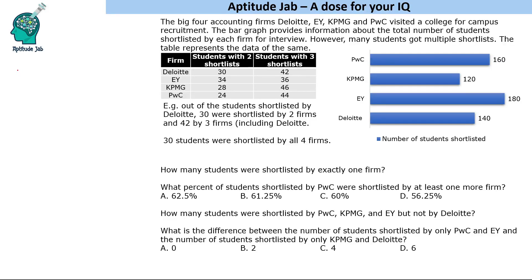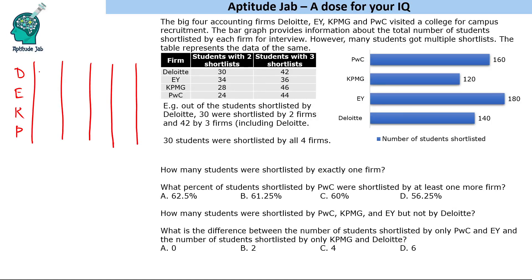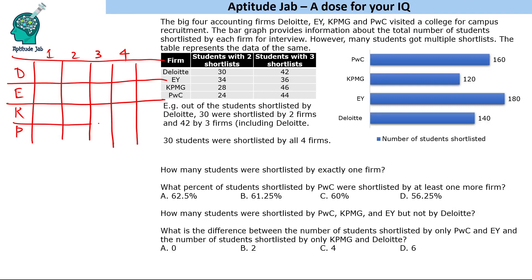We'll build a table first and then make a Venn diagram for Deloitte, EY, KPMG, and PWC. There will be four categories of students: one shortlist, two shortlists, three shortlists, and four shortlists. The two-shortlist and three-shortlist values are given to us — for example, the four-shortlist value is 30 everywhere, since 30 students were shortlisted by all four firms. The three-shortlist values are 42, 36, 46, and 44.